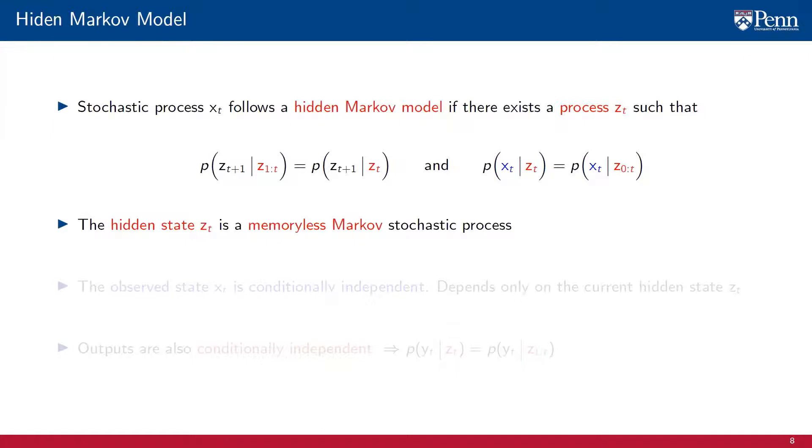Thus, we have that the hidden state z of t is a memoryless Markov stochastic process, and that the observed state x of t is conditionally independent. It depends only on the current value of the hidden state zt, not on the entire path trajectory of the hidden state.